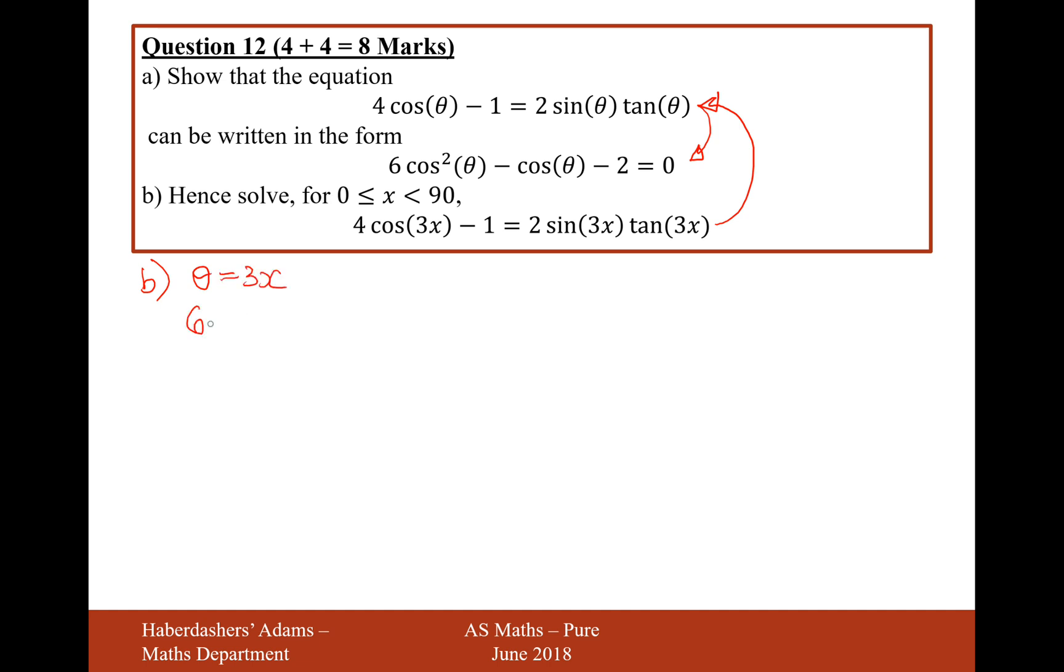So we're now going to be solving 6 cos² 3x minus cos 3x minus 2 equals 0. Now the next thing I need to do is, my domain is going to be in between 0 to 90, but that's for the x value.